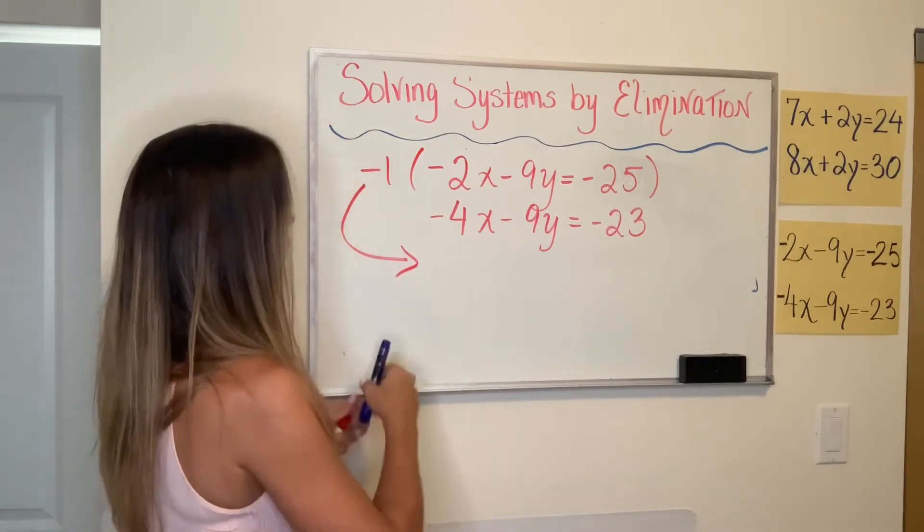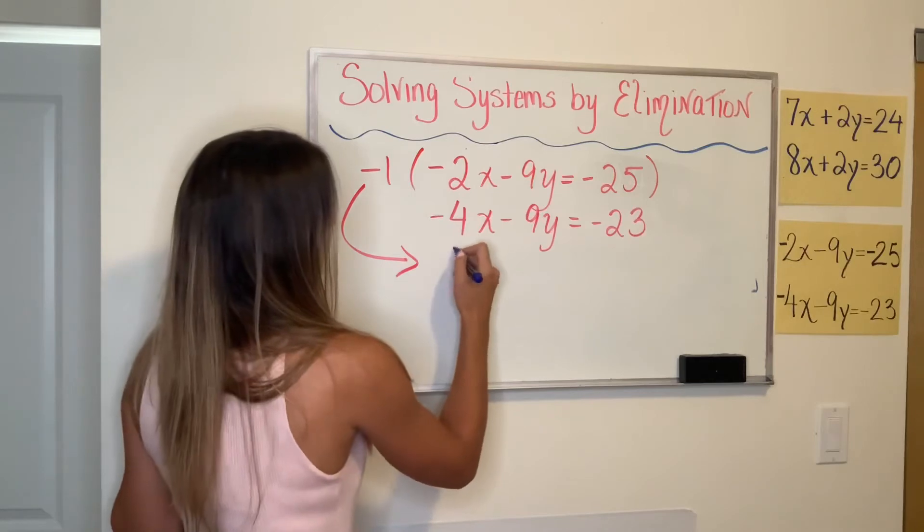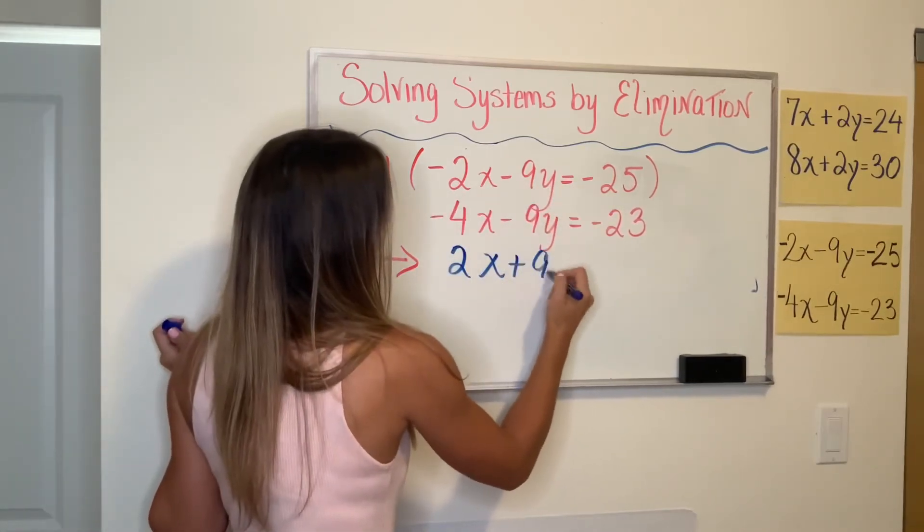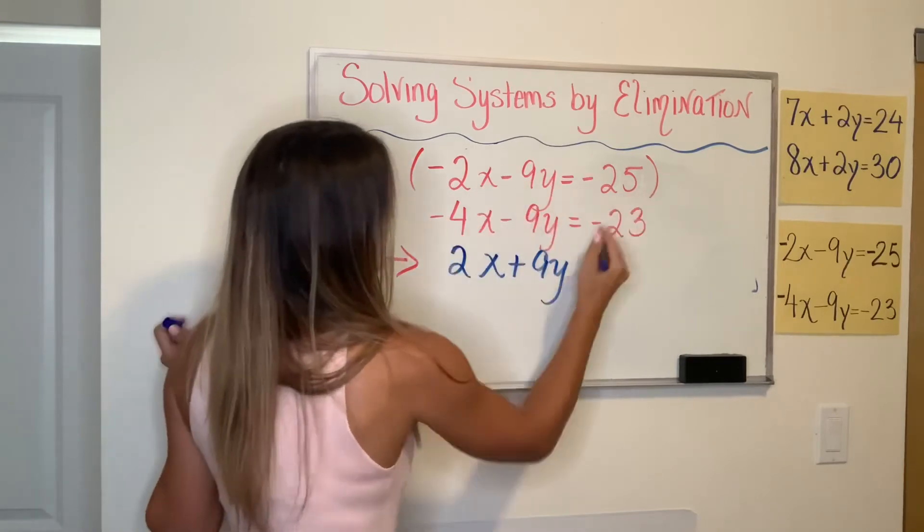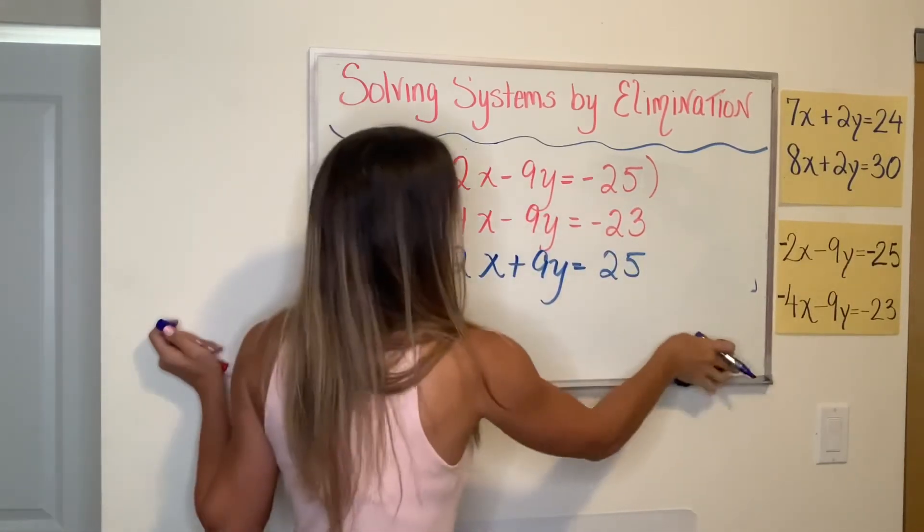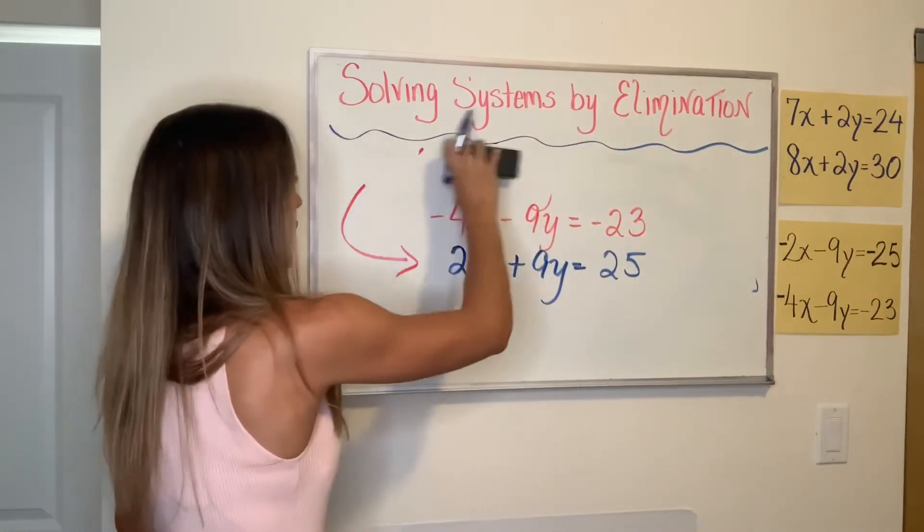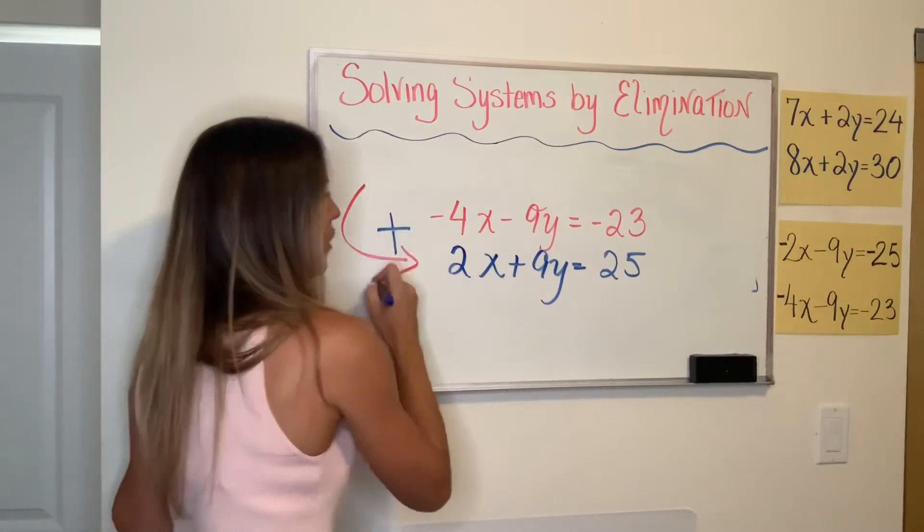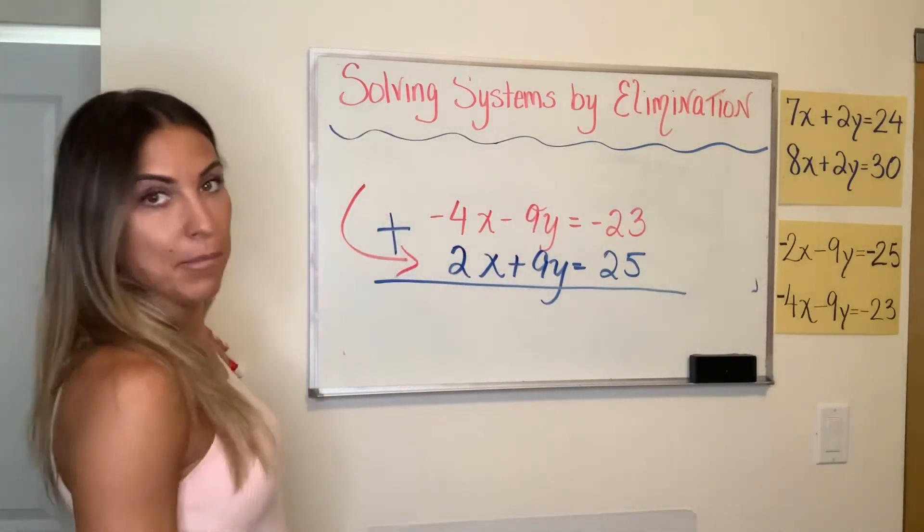I'm going to multiply this whole top equation by negative one, and I'm going to bring the new equation down here in blue. So distribute out that negative one. I have negative one times negative 2X, that's positive 2X. Negative one times negative 9Y, that's positive 9Y. Negative one times negative 25, that's positive 25. So now I'm going to erase this one so it doesn't confuse us. Now that I've got those opposite coefficients that I like, I can add the two equations together to eliminate a variable.